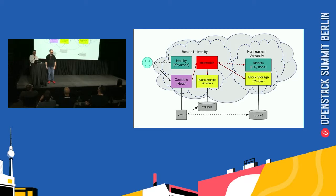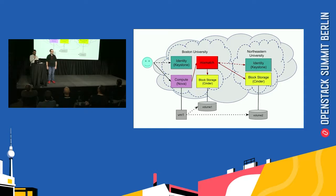Mix and Match will receive the request to attach Volume 2 and will perform Keystone-to-Keystone authentication, which is a method of federating identities from one cloud to another. It will find where Volume 2 is, then forward your API request to attach Volume 2 and send the response back. Through iSCSI, Nova will be able to attach Volume 2 to VM 1.